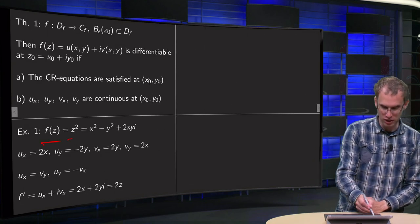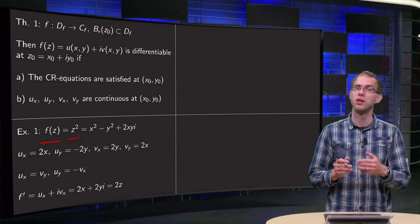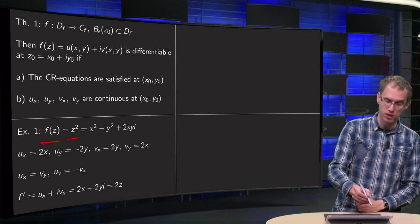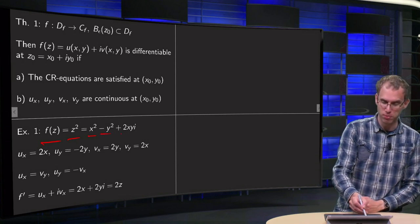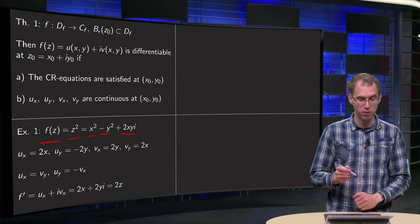f of z equals z squared. Of course we can use the definition to see whether it's differentiable or not, but let's see what happens if we use the Cauchy-Riemann equations. So z squared equals x squared minus y squared plus 2xy times i. So what happens if you compute ux, etc.